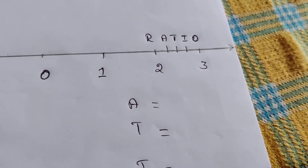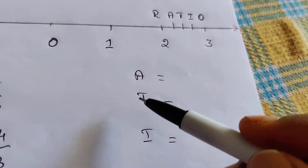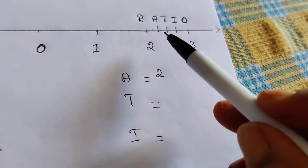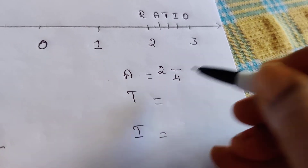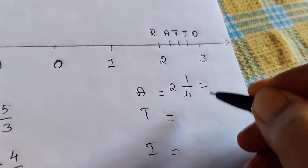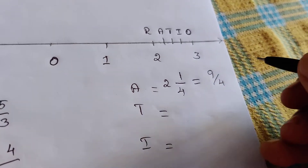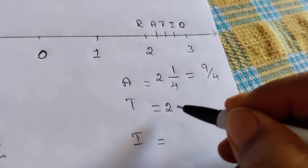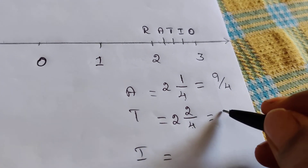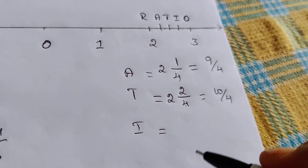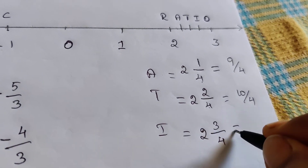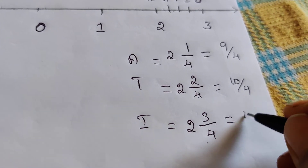Let's add this: R, A, T, A, O. R equals 2, O equals 3. So A equals 2, meaning 2 equal parts — 1, 2, 3, 4 equal parts — so A equals 1 by 4. 2 times 4 is 8, plus 1 is 9, so it is 9 by 4. T equals 2 across: 4 equal parts, T is the second line. 2 times 4 is 8, plus 2 is 10, so this is 10 by 4. I has 4 equal parts at position 3: 8 plus 3 is 11, so it is 11 by 4.